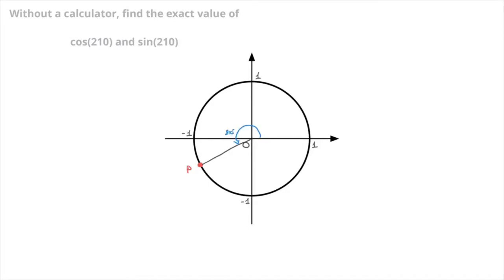Now when dealing with angles in the third quadrant, we should always make a note of the angle that separates point P from 180 degrees — so that would be this angle I'm highlighting right now. Well, since to get to point P we went through 210, that's 30 degrees more than 180. In other words, this angle here is 30 degrees.